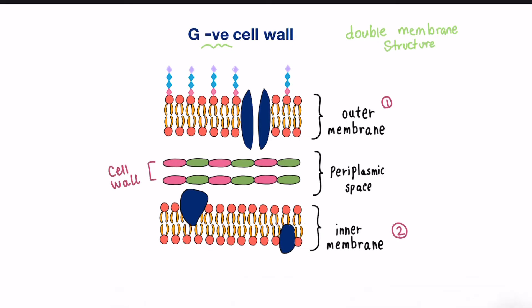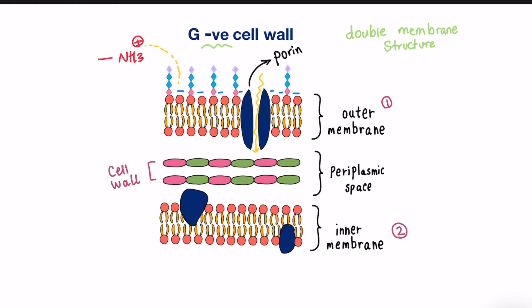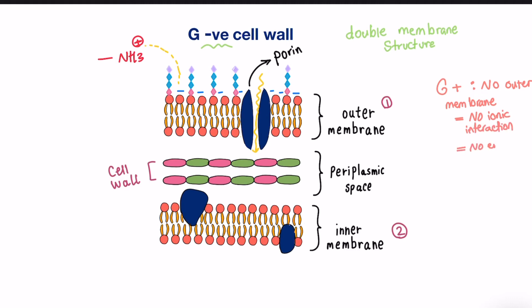The outer membrane is negatively charged, and aminoglycosides, as the name suggests, are made of basic amino groups that hold positive charges. Thus, an ionic interaction between these groups in the drug and the outer surface of the membrane may take place, activating channels in the outer membrane called porins, which the drug can pass through into the cell. Gram-positive bacteria lack this outer membrane, consisting of only the inner membrane covered by a cell wall, so no ionic interaction can occur and these hydrophilic drugs cannot enter.